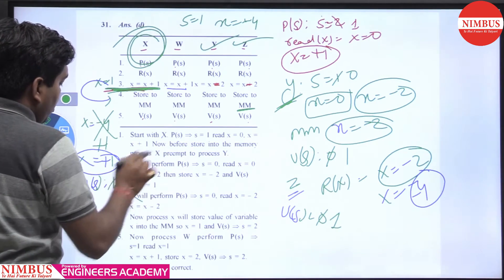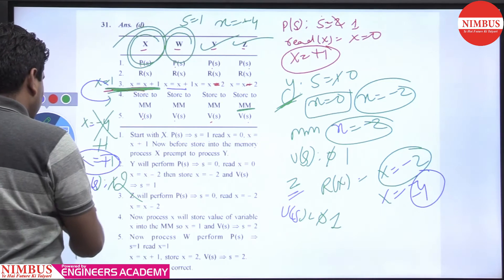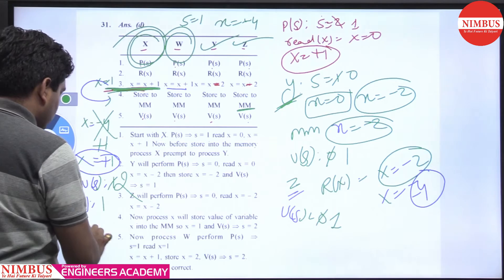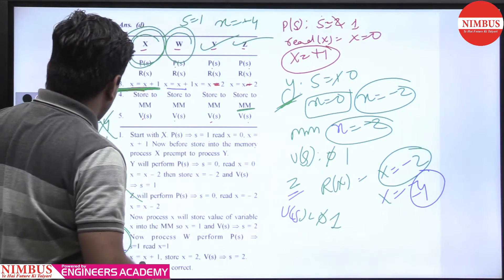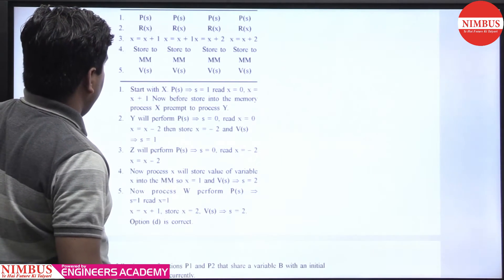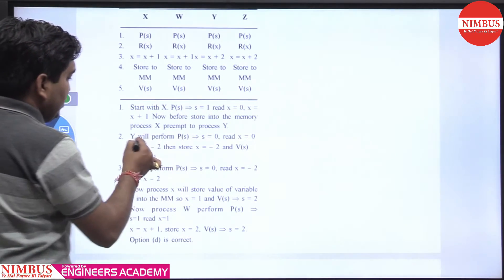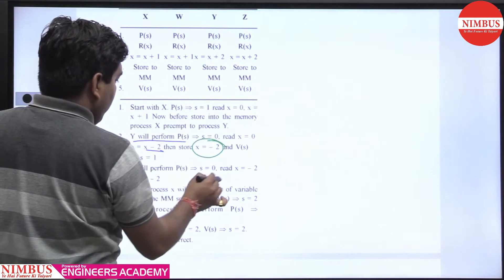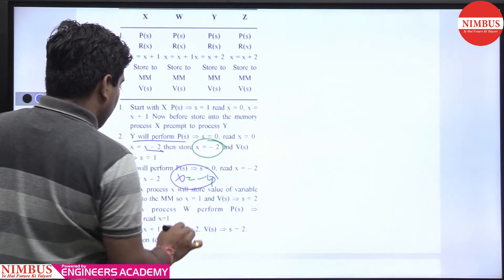V(s) makes s go from 1 to 2. Then we execute process w: w reads x equal to 1 and increments by 1. So x equals plus 2 in this maximum case. First process x reads x, then y performs x minus 2 and stores, then z performs x minus 2 giving minus 4.